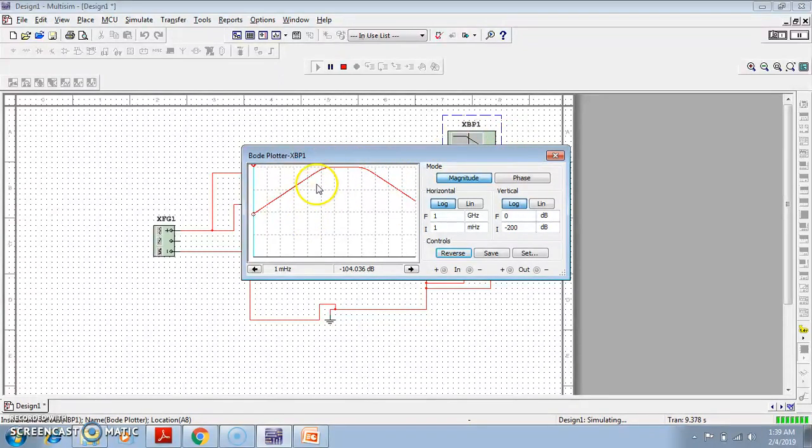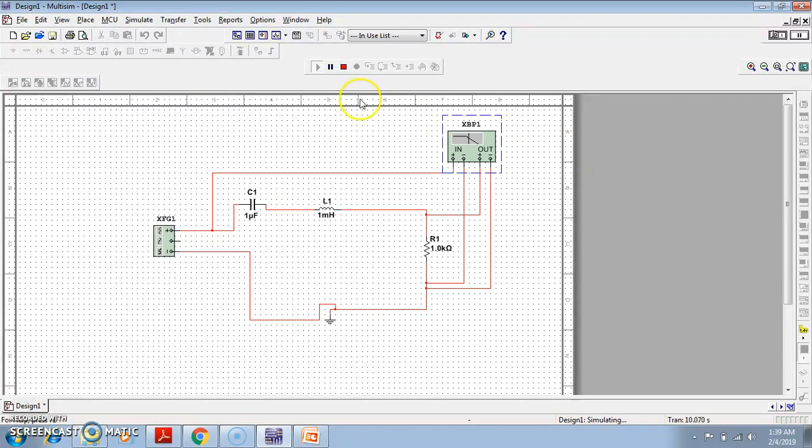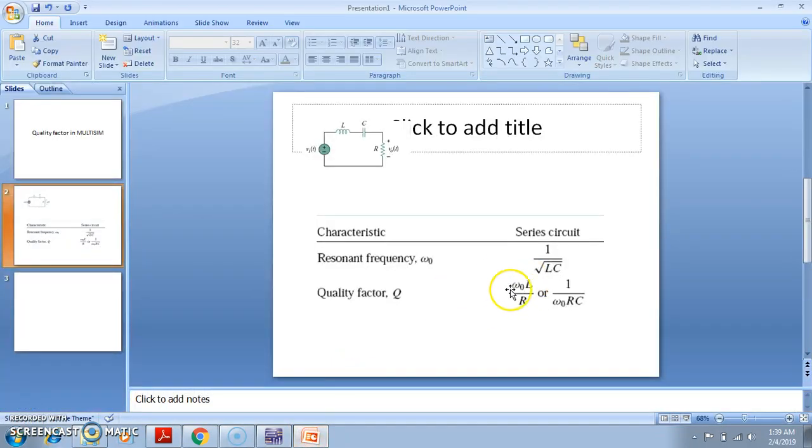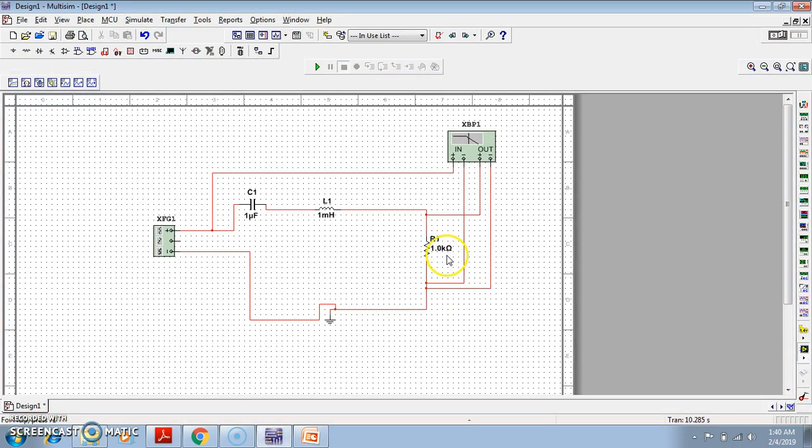Now let us make it steeper with the concept of basic electronics. The graph steepness will depend on the quality factor. So somehow we have to improve the quality factor, then the graph will be steeper. The expression quality factor equals omega naught L by R. So if we want to increase the quality factor, we should decrease the resistance. Resistance is 1 kilohm.